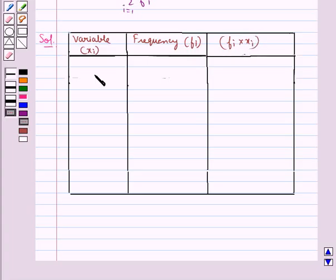We are given the variable xi as 3, 2, 4, 5, and 7.